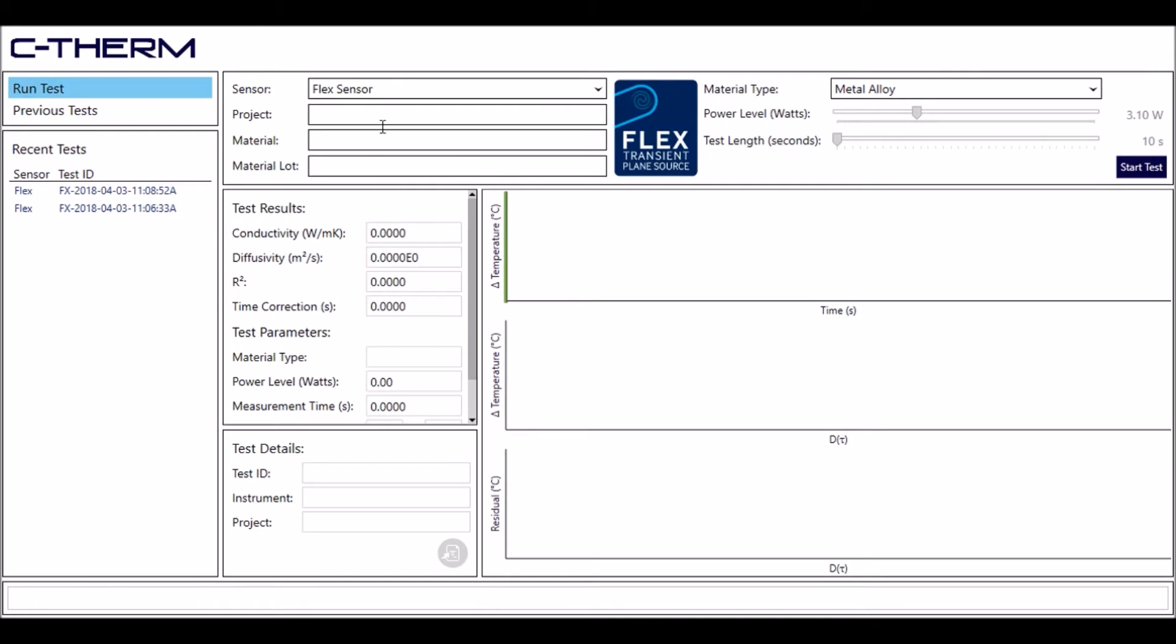Now that we're in the software, you're going to select your sensor, which is the flex sensor. You're going to come over here to material type and select your metal alloy reference material, which gives you a preset power level and test length. The power level is 3.10 watts, test length being 10 seconds. And then all you have to do is click start test.